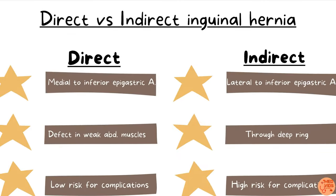Differences between direct and indirect inguinal hernia: direct inguinal hernia occurs medial to the inferior epigastric artery, whereas indirect occurs lateral to it. Direct inguinal hernia occurs through a defect in weak abdominal musculature, such as in old age or collagen defects, whereas indirect inguinal hernia occurs through the deep inguinal ring. Direct inguinal hernia has a low risk of complications because of a wider neck, whereas indirect inguinal hernia has a high risk of complications like strangulation because the neck is usually narrow.